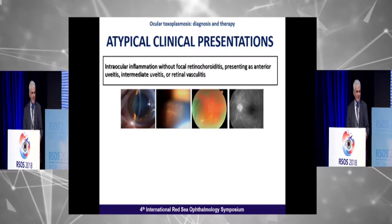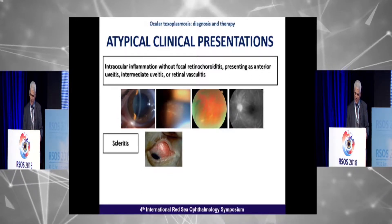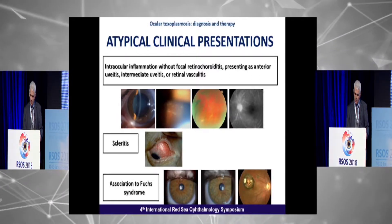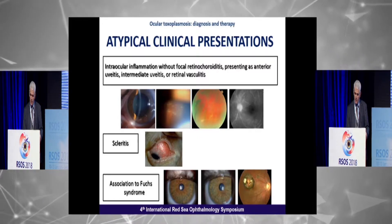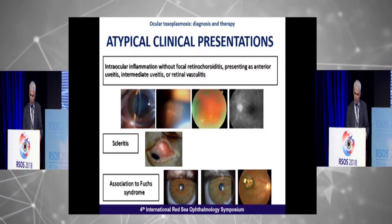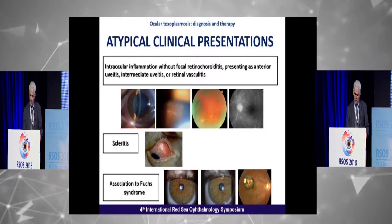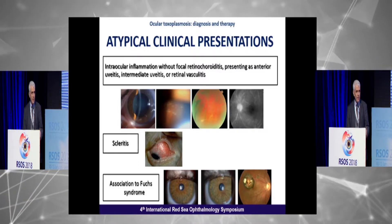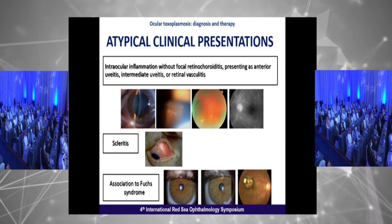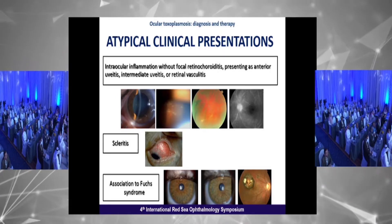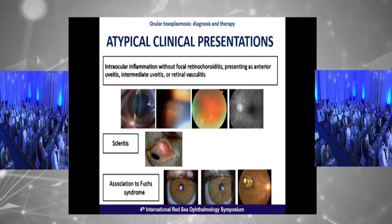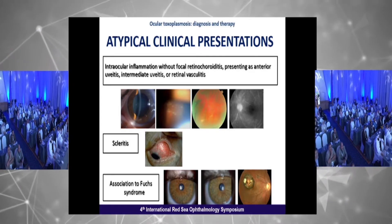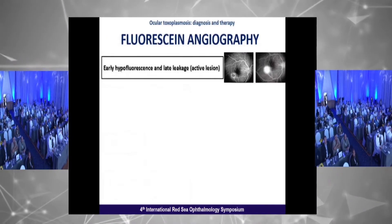Retinal vasculitis as an isolated finding is possible but uncommon. Scleritis is very uncommon. Pay attention to the association of Toxoplasmosis with Fuchs syndrome — mainly patients with an inactive lesion where intraocular inflammation is caused not by Toxoplasmosis but by Fuchs uveitis. This is a classic association.